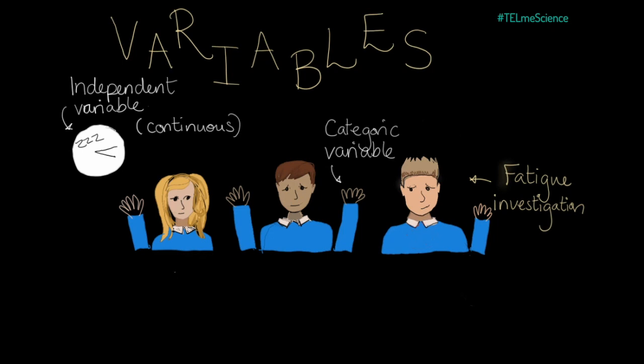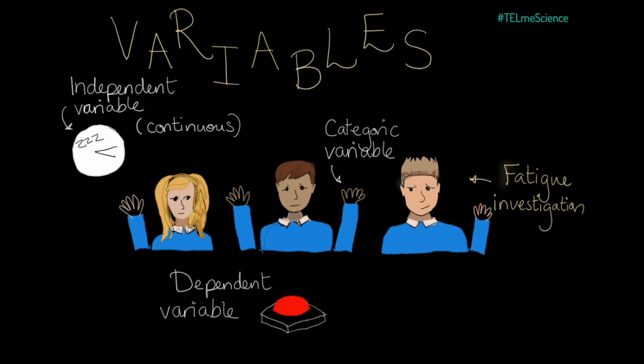Anyway, back to depriving people of sleep. In our cruel little experiment, the dependent variable is the result that we're measuring. It depends on the independent variable. In our experiment, this is an individual's reaction time, probably measured by a computer with a press-the-button-when-it-lights type method.